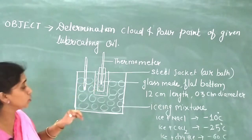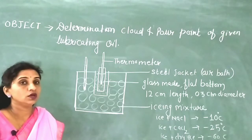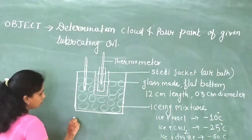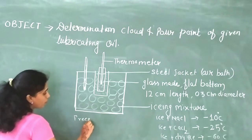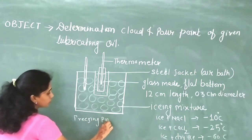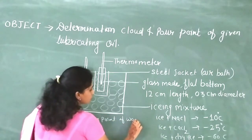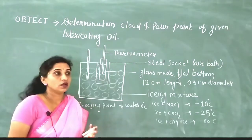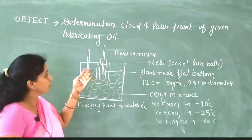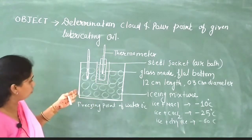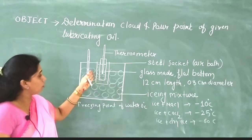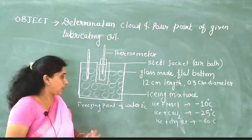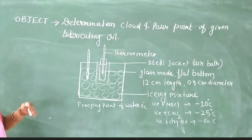A teacher may also ask why the lubricating oil should be free from moisture or water content. The answer is that the freezing point of water is 0°C, so at 0°C we would get confused in the determination of the cloud and pour point. Therefore, oil used for this determination should be free from moisture or water content.